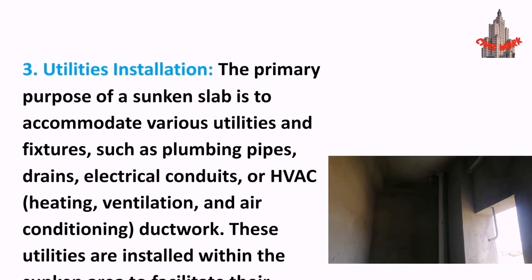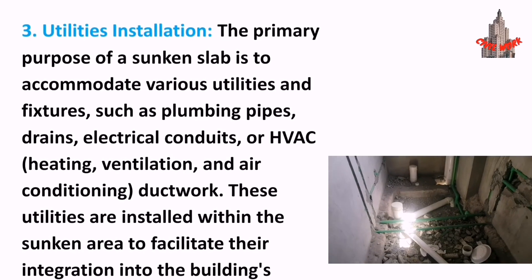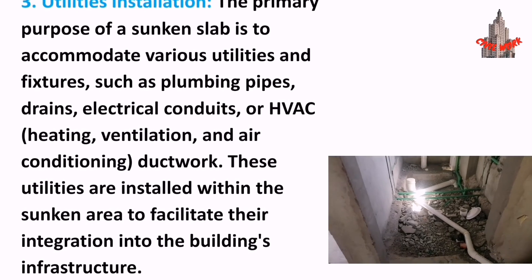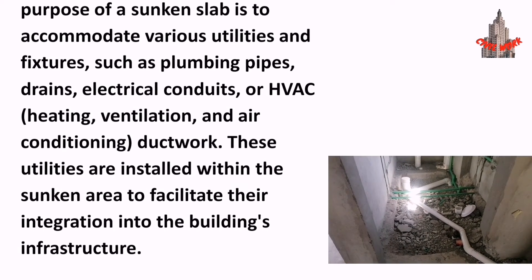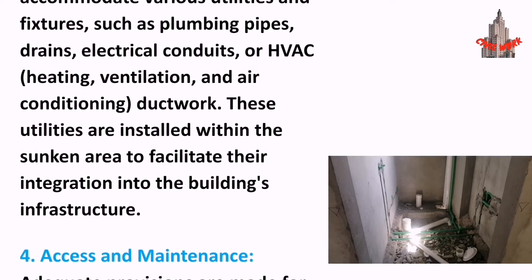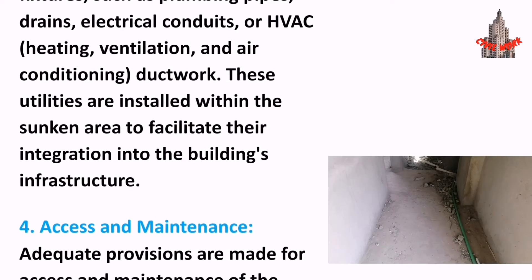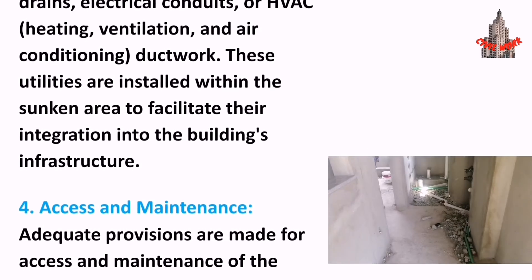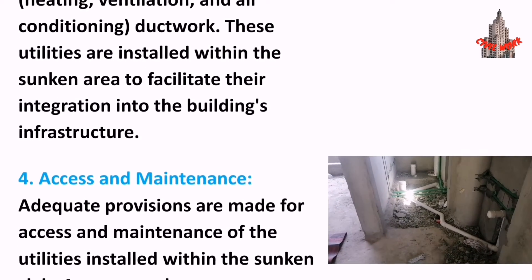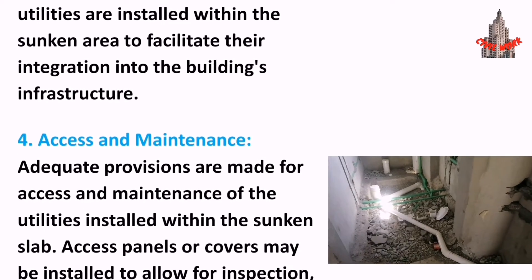Three: Utilities installations. The primary purpose of a sunken slab is to accommodate various utilities and fixtures such as plumbing pipes, drains, electrical conduits, or HVAC — heating, ventilation, and air conditioning — ductwork. These utilities are installed within the sunken area to facilitate their integration into the building infrastructure.